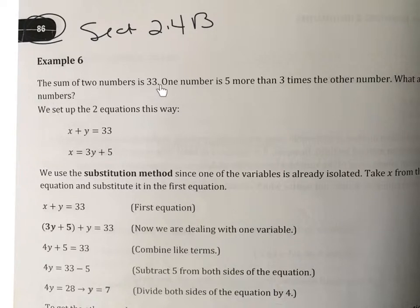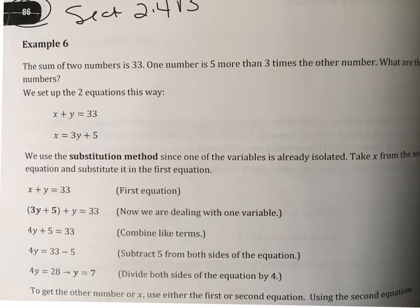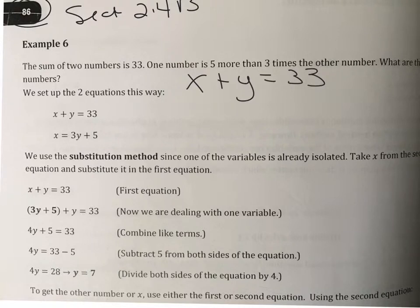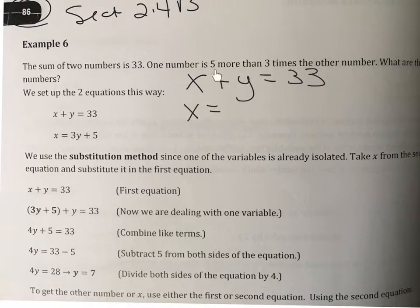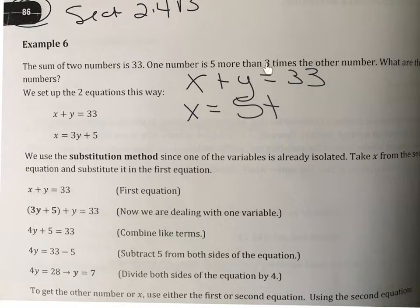Let's look at number six: the sum of two numbers is 33; one number is five more than three times the other number. What are the two numbers? The trick here is setting up your equations correctly. We'll use X and Y for the two numbers. 'Sum' means the numbers are being added, so X plus Y equals 33. Then, one number — I'll choose X — 'is' means equals, 'five more than' means five is being added, 'three times the other number' means three times Y.